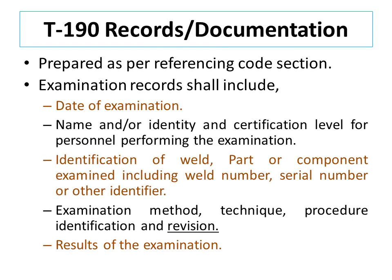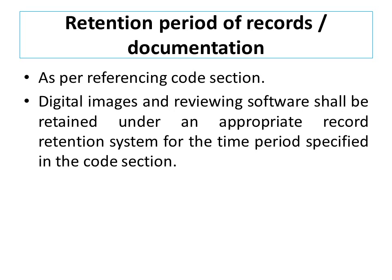Records and documentation: records or documentation is prepared as per the referencing code section. Examination records shall include date of examination; name and/or identity and certification level for personnel performing the examination; identification of weld, part or component examined including weld number, serial number or other identifier; examination method, technique, procedure identification and revision; and results of the examination. The retention periods of records are to be as specified by the referencing code section. Digital images and reviewing software shall be retained under an appropriate record retention system for the time period specified in the code section. An interesting point is that the reviewing software must also be retained.